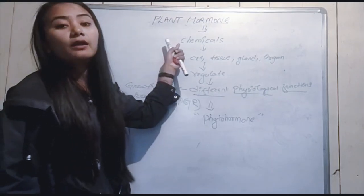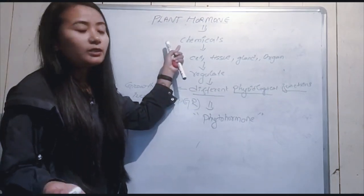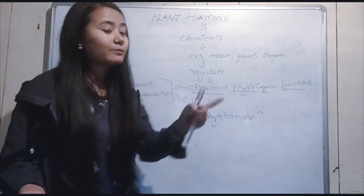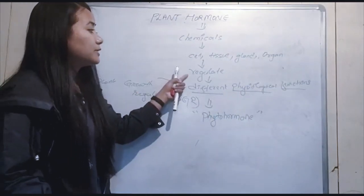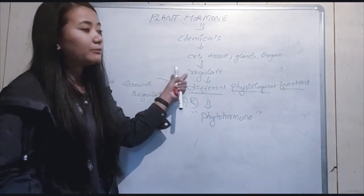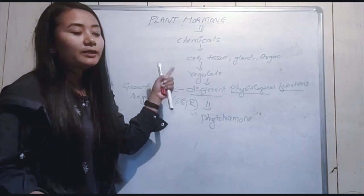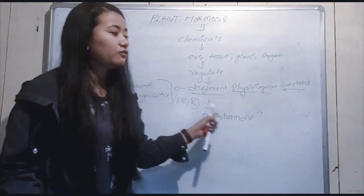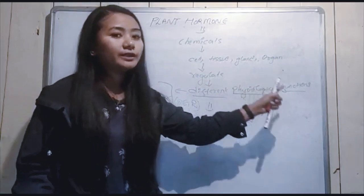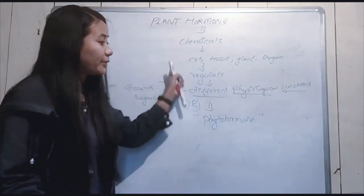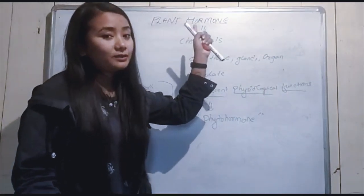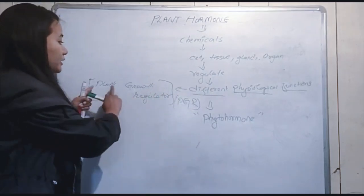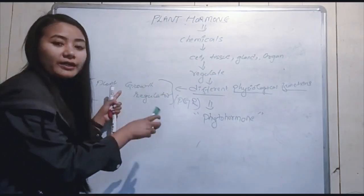To summarize: a plant hormone is a chemical secreted by cells, tissues, and organs of a plant. It works to regulate different physiological functions. In the case of plants, it mainly regulates growth.